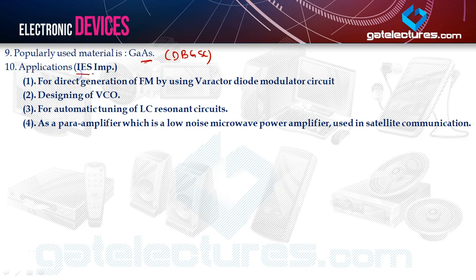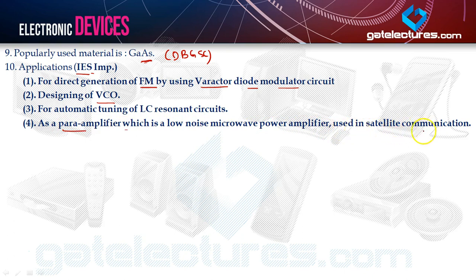Applications are important for IES — gate has never asked questions from this topic. Applications include: direct generation of FM using a varactor diode modulator circuit, designing of voltage-controlled oscillators, automatic tuning of LC resonance circuits, and as a para-amplifier, which is a low noise microwave power amplifier used in satellite communication.